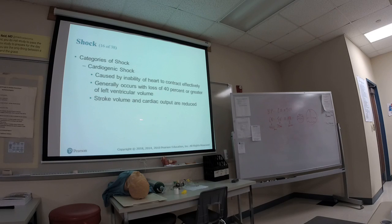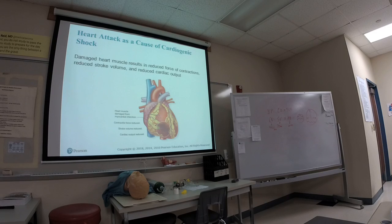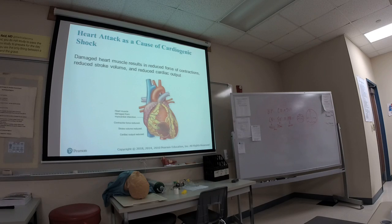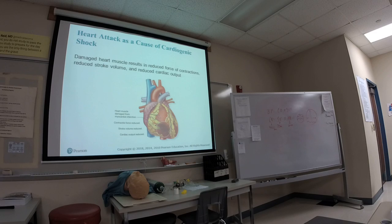Here's the diagram showing a large surface MI — dead tissue that won't contract. Without that tissue contracting, you lose stroke volume and cardiac output. The term for this is 'wall motion abnormality' — the heart wall is not moving correctly.